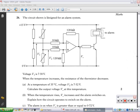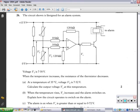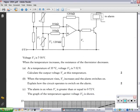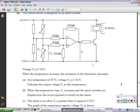Right. Let's move on to the next bit. The next bit asks us, when the temperature rises, V0 increases and the alarm switches on. Explain how the circuit operates to switch on the alarm. Now, this means you need to talk your way through how this alarm bit here comes on. So, it says, when the temperature rises, V0 increases and the alarm switches on.